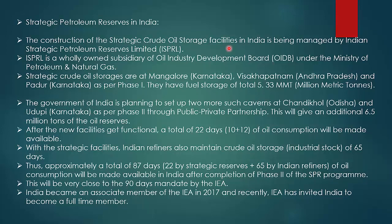Strategic crude oil storages in India are at Mangalore (Karnataka), Visakhapatnam (Andhra Pradesh), and Padur (Karnataka) under Phase 1, with total fuel storage of 5.33 million metric tons. The government of India is planning to set up two more facilities at Chandikhol (Odisha) and Udupi (Karnataka) under Phase 2 through public-private partnership.